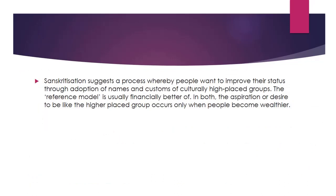Sanskritization suggests a process whereby people want to improve their status through adoption of names and customs of culturally high-placed groups. They even try to take the surnames of the upper caste — in India, a surname often reveals one's caste — so to increase social standing they would even change their names. The reference model is usually financially better off, and the aspiration to be like the higher-placed group occurs when people become wealthier.